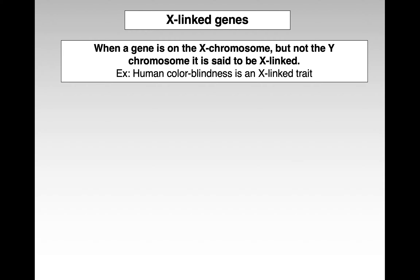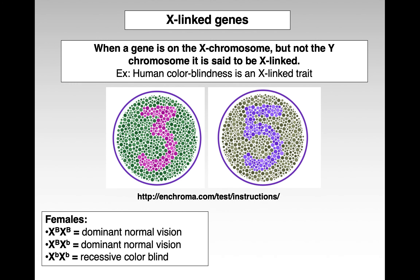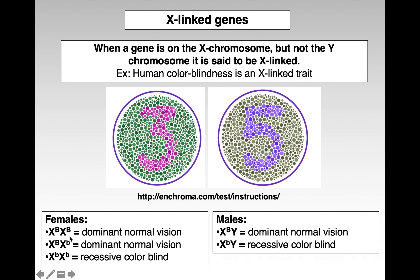X-linked genes: when a gene is on the X chromosome, it is said to be X-linked. Human colorblindness is an example of that. You write these out like this: for females, you can have homozygous dominant, homozygous recessive, or heterozygous. For males, there are only two options — dominant or recessive — because you can't have that heterozygous trait since you don't have two X's.